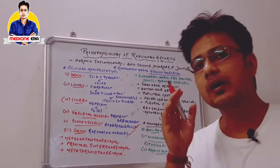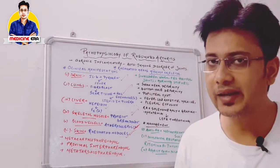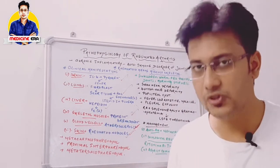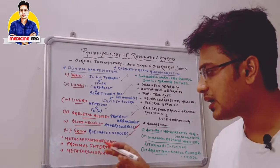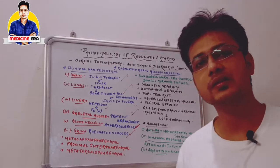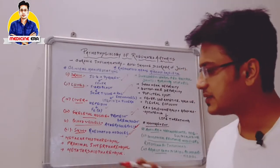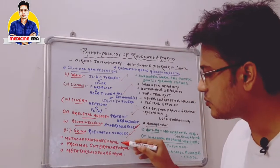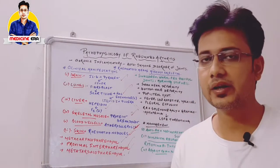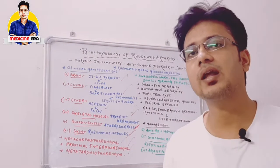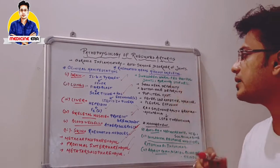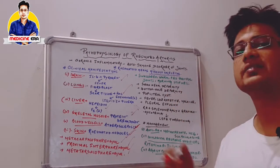In case of skin, it causes rheumatoid nodule formation, which is also a very dangerous aspect. You have to keep in mind that this problem creates bilateral and symmetrical joint involvement — in case of the hand, the metacarpophalangeal joints and proximal interphalangeal joints; in case of the legs, the metatarsophalangeal joints are mainly affected by rheumatoid arthritis.